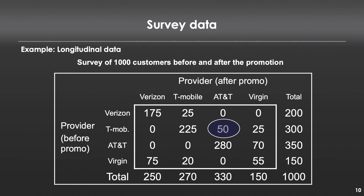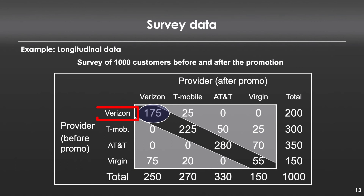For instance, if we picked out 50, we'd say there were 50 T-Mobile customers who switched to becoming AT&T customers. If we look at the diagonal, that's our loyalty metric — the number of people who did not switch. For example, there were 175 Verizon customers who remained Verizon customers.